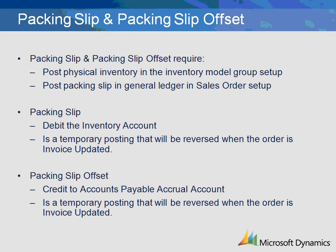The packing slip and packing slip offset transactions will create a financial posting if the Microsoft Dynamics AX system has the following two situations set up: post physical inventory in the inventory model group setup, and post packing slip in general ledger in the purchase order setup. The packing slip transaction will record a debit to the ledger account entered with a credit offset to the packing slip offset transaction. These are temporary postings that will be reversed when the purchase order is invoice updated. If you choose to use this functionality, both settings must be enabled. The pack slip and pack slip offset transactions can be set up as an accrual transaction that could record the inventory and accounts payable accruals. A typical setup is to debit an inventory or inventory accrual type account and credit an accounts payable accrual type account. These transactions are created at the time of packing slip update in Microsoft Dynamics AX.